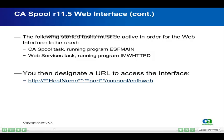The following started tasks must be active in order for the Web Interface to be used: the CA Spool task running program ESF-Main, and the Web Services task running program IMWH-TTPD. You then designate a URL to access the interface, in the format HTTP colon slash slash hostname colon port slash CA Spool slash ESF-H-Web.